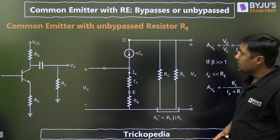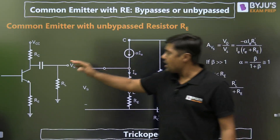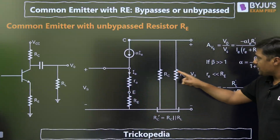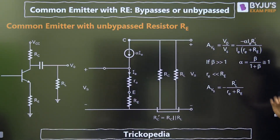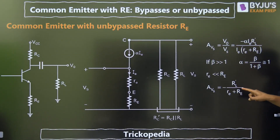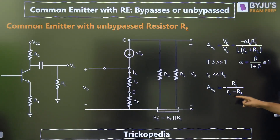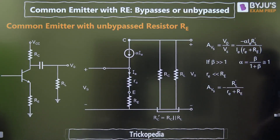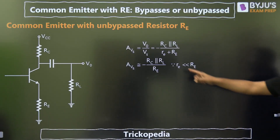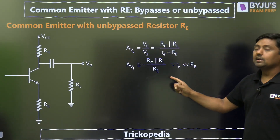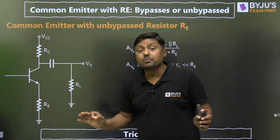Then, if suppose in a diagram RL is also present, then in the model this RL is in parallel with RC. So what is the change in the formula? Everything will remain the same — AVS will become minus RL-dash upon (small re plus capital RE), where RL-dash is RC parallel with RL. Again we can neglect small re because it is very small, so the approximate formula becomes minus (RC parallel RL) divided by capital RE.